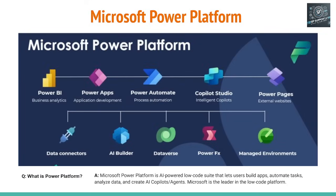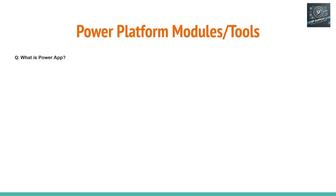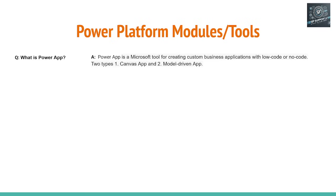Let's go to the next slide and understand each one of these. What is a Power App? Power App is a Microsoft tool that enables the users to create web applications in a low-code or no-code platform — no need to write code programs to create these web applications. Broadly, there are two types of Power Apps: one is a Canvas app and another one is a model-driven app.